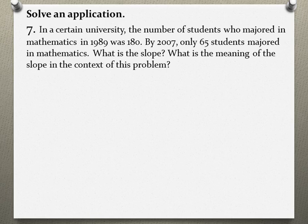In a certain university, the number of students who majored in mathematics in 1989 was 180. By 2007, only 65 students majored in mathematics. What is the slope? What is the meaning of the slope in the context of this problem?